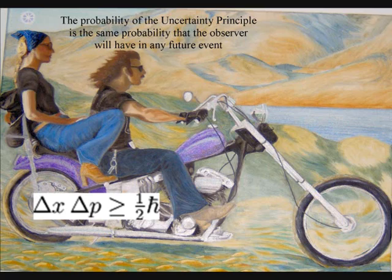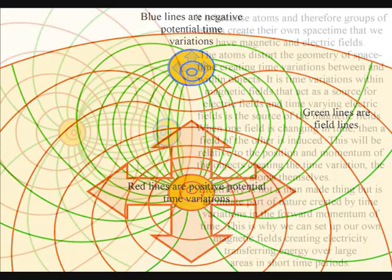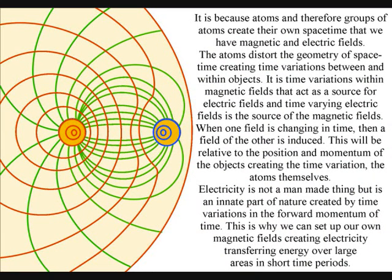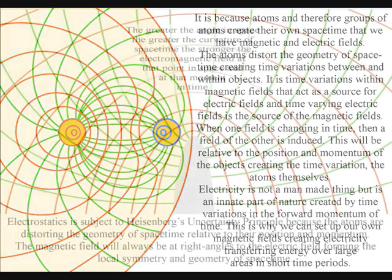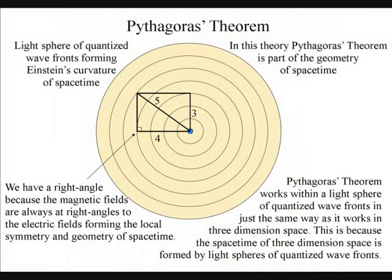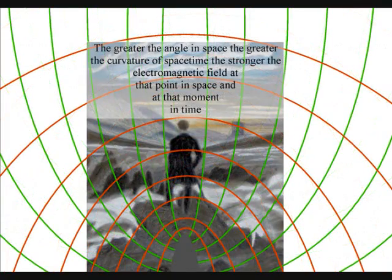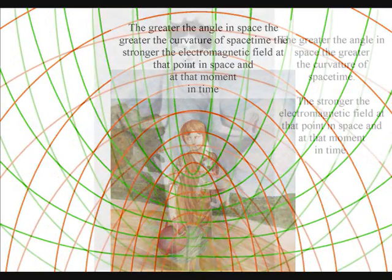It is because the atoms can distort the geometry of spacetime that we have electromagnetic fields. It is time variations within magnetic fields that act as a source for electric fields, and time-varying electric fields induce magnetic fields. When one field is changing in time, then a field of the other is induced. This will be relative to the position and momentum of the objects creating the time variation — the atoms themselves. The magnetic fields are always at right angles to the electric fields, forming the local spacetime symmetry and geometry. The greater the angle in space, the greater the curvature of spacetime, the stronger the electromagnetic field at that point in space and at that moment in time.